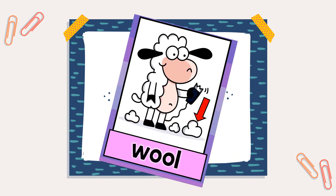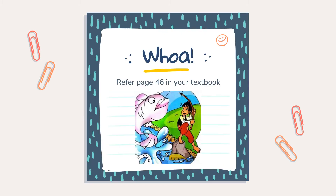Wool. Wool. What is wool? Wool ni daripada kambing — biri-biri. Apa pakaian yang diperbuat daripada wool? Selalunya pakaian musim sejuk — sweater, socks. Alright, next.